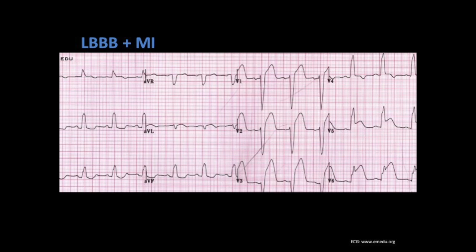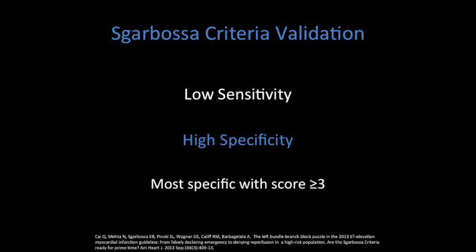Looking at this ECG, you're able to see two different criteria: criteria A in green and criteria C in blue. Based on this ECG and with the right symptoms, this patient would be considered to be having a myocardial infarction. The strength of the Sgarbossa criteria is its high specificity — meaning that if it's positive, there's a high likelihood the person's having a STEMI. Its weakness is low sensitivity, meaning that it could actually miss a bunch of cases.